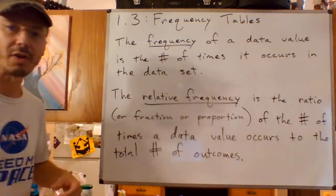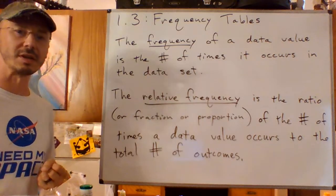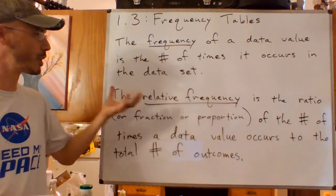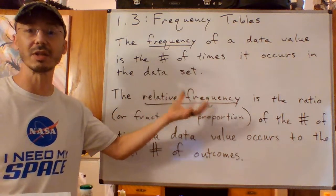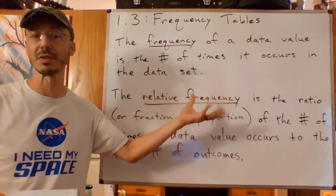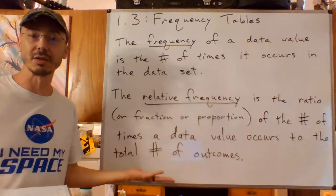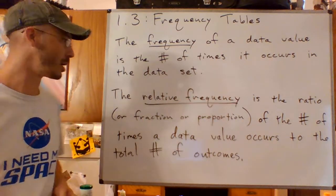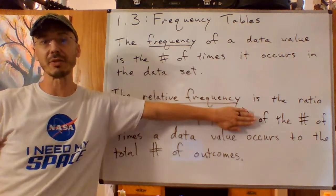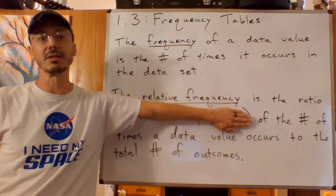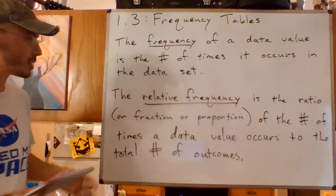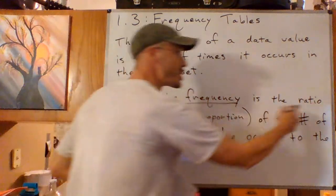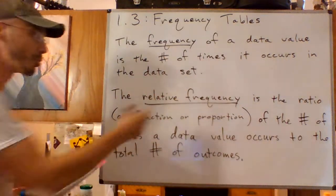So in other words, out of all the outcomes together, the relative frequency of a data value is the number of times that value appears divided by the total number, or the ratio of that number to the total number. You can read this sentence leaving out the parentheses and it's readable. I did want to mention though that those other terms are the same thing, the ratio is the proportion.